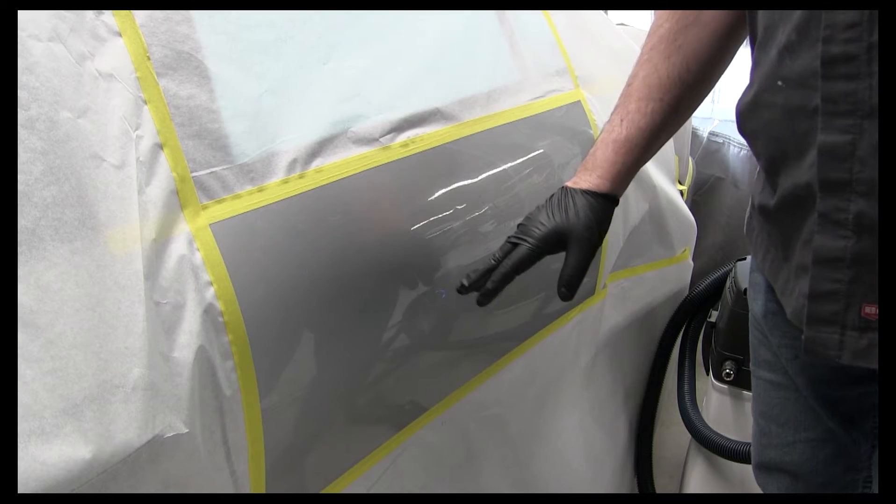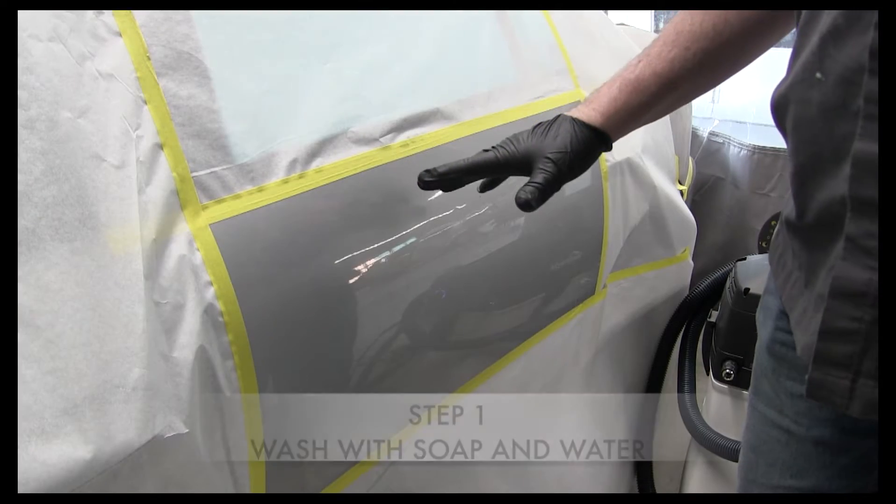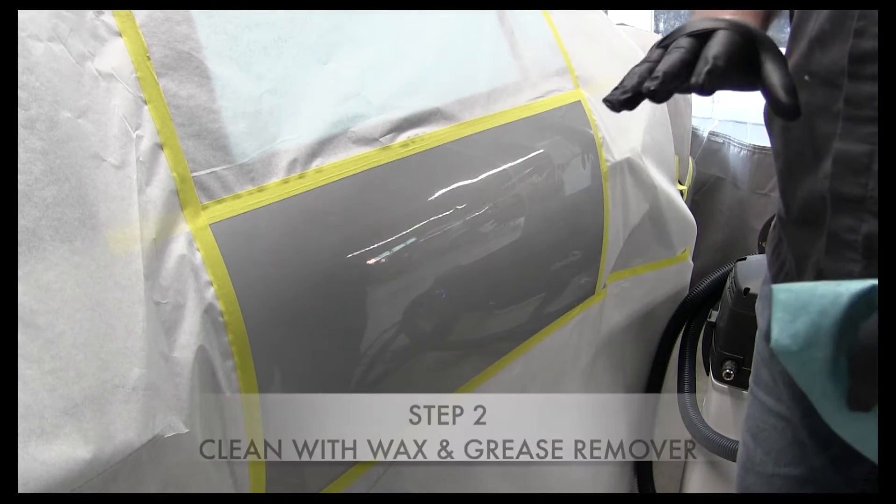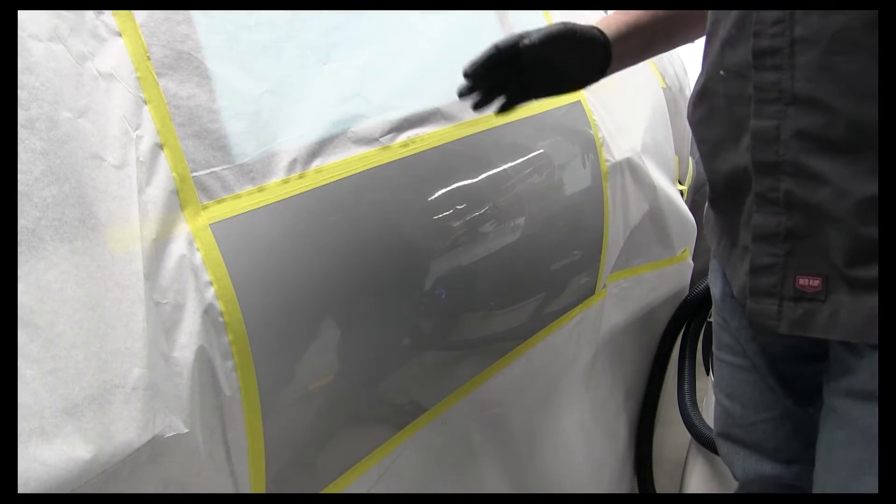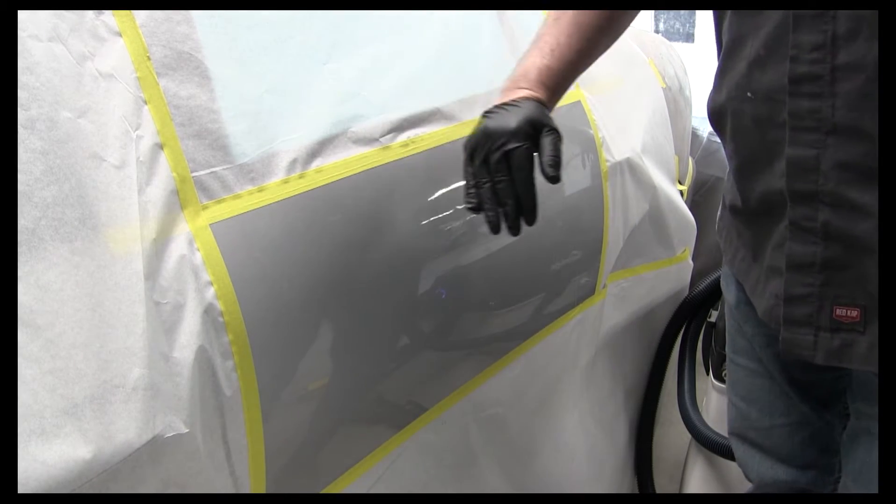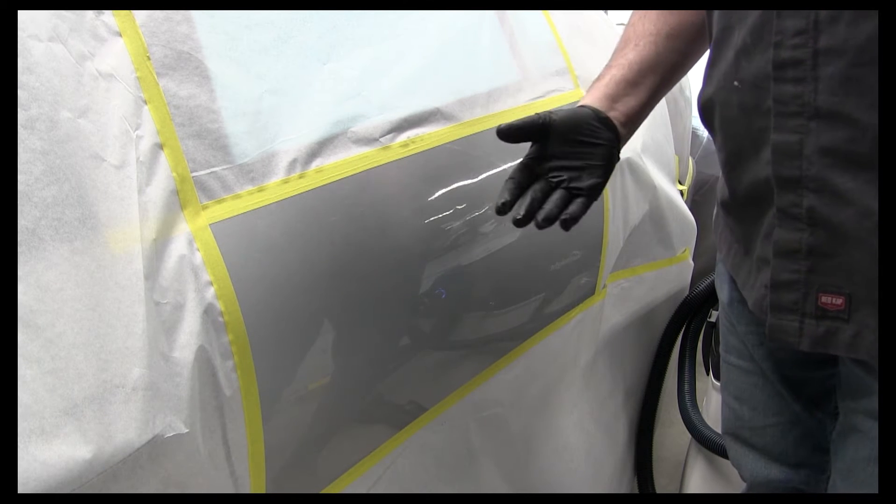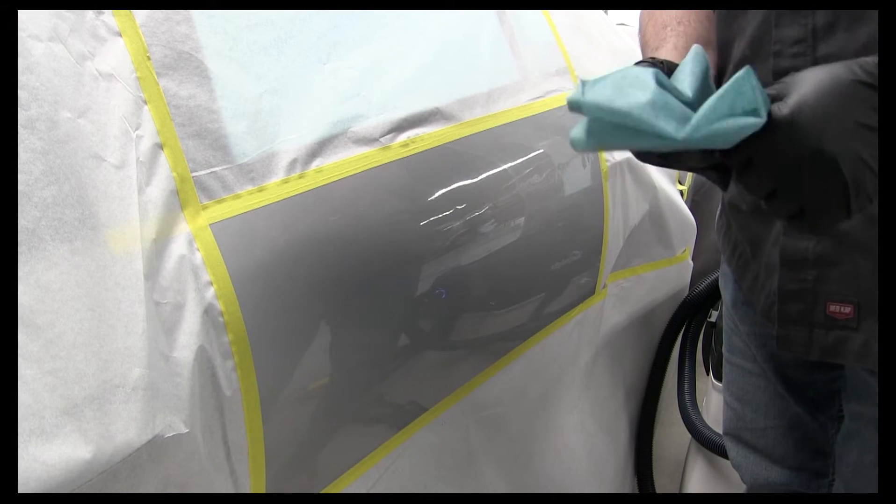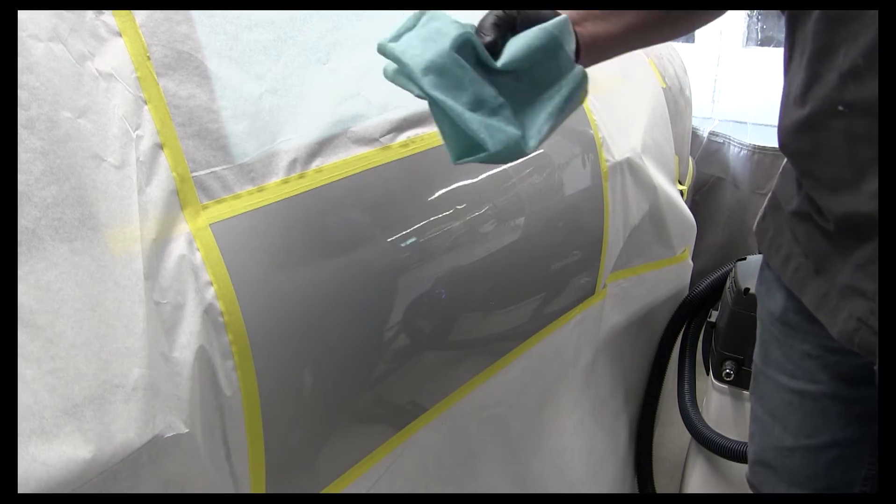Before you start, I don't know how well you can see this dent here, but you want to wash it with soap and water, which I've already done, and then you want to go over it with some wax and grease remover. Not only does this clean all the contaminants, the silicones, the waxes, and things like that off, but this is also going to get the contaminants off there so it doesn't load your sandpaper. That's going to allow your sandpaper to last longer, so you use less sandpaper by cleaning the surface.